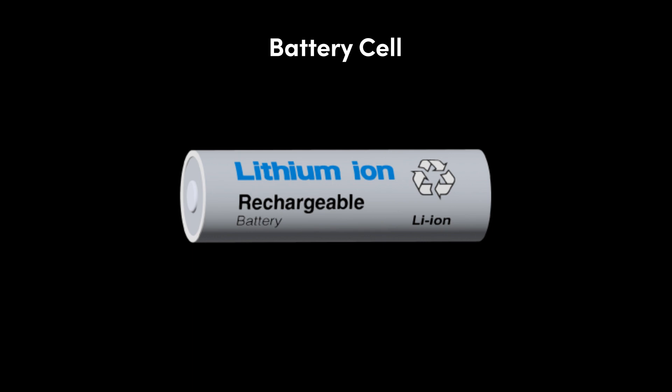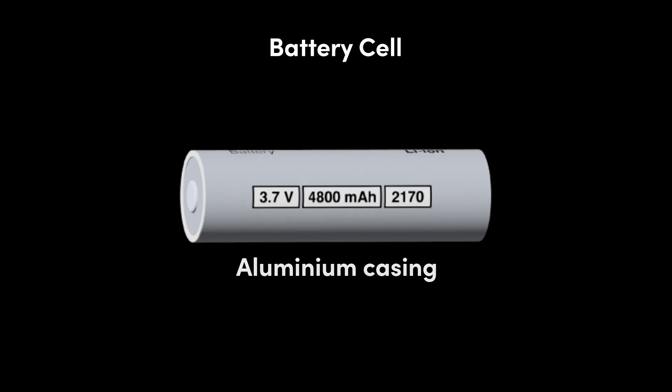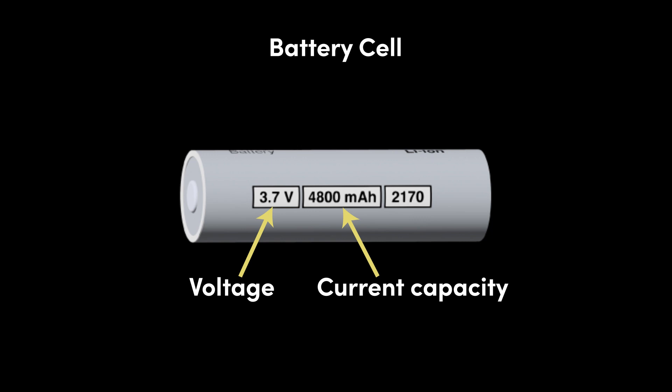One single battery like this is called a battery cell. The outer aluminum casing of the cell usually has some numbers printed on it, including the voltage, 3.7 volts, the current capacity, which in this case is 4,800 milliamp hours, and another number.